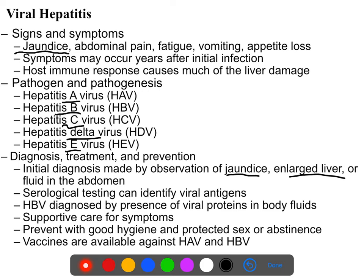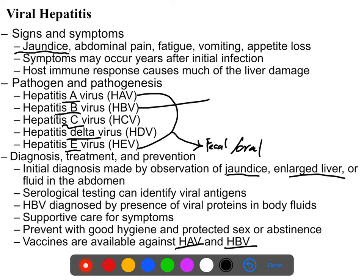Prevention is based on two things: avoidance and vaccines. There are vaccines for hepatitis A and hepatitis B. Hepatitis A and E are both fecal-oral, so practicing good food hygiene and sanitary practices are key. Hepatitis B, C, and Delta are all sexually transmitted infections, and are best avoided using safer sex practices.